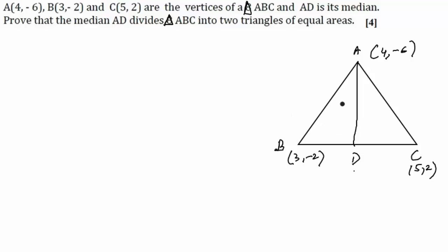then we'll find the area of triangle ABD and ADC and prove that they are equal. So first, let's find the coordinates of D. We can find it by the midpoint theorem: that will be (3+5)/2, (-2+2)/2,